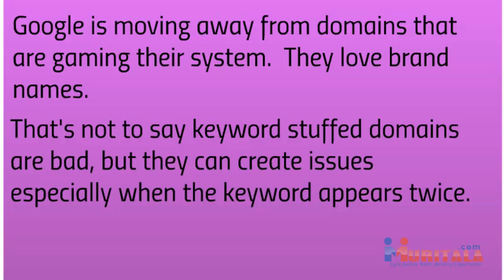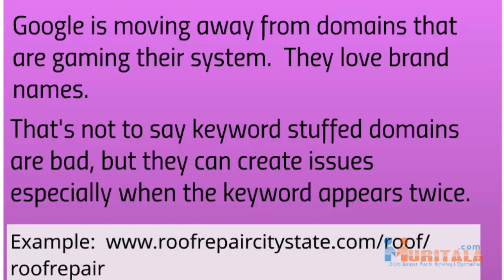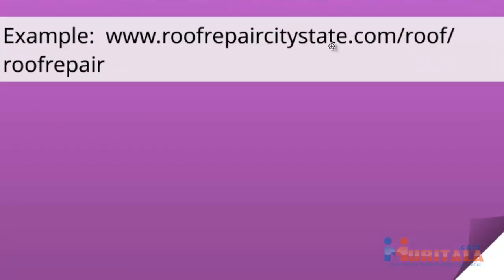With 'www.roofrepaircitystate.com,' here's the complication: if you create a category such as 'roof' and then you create a page that is 'roof repair,' you can see there are a lot of repetitive keywords in the URL. Google does not really like to see repetitive keywords because to them that is like keyword stuffing and keyword spamming. Maybe that's something you could get away with a decade ago, but not necessarily nowadays.